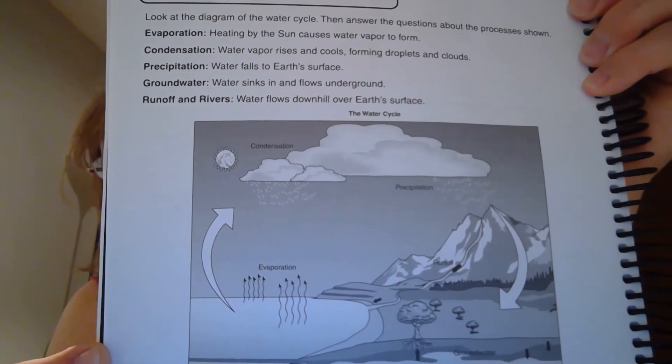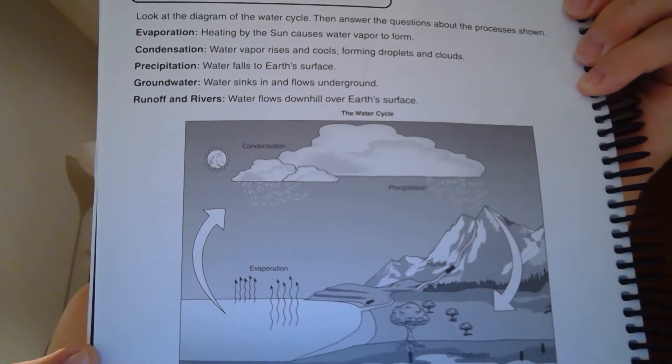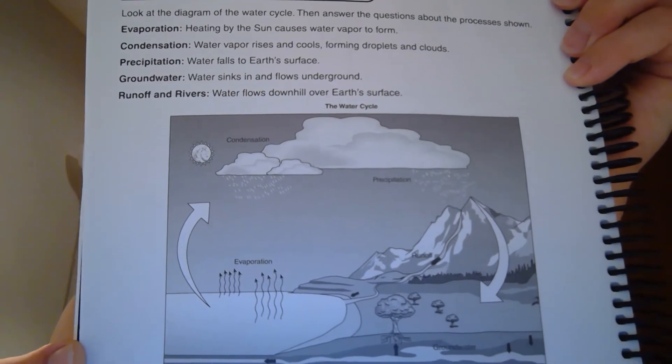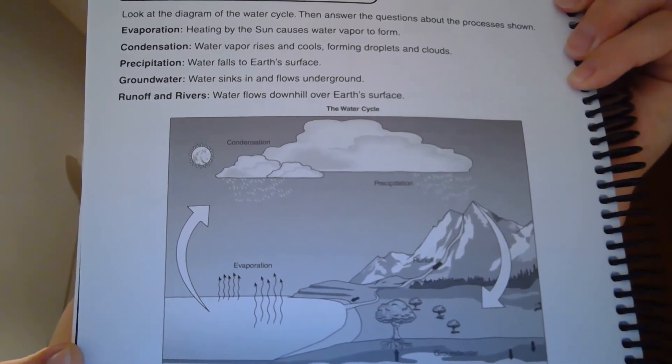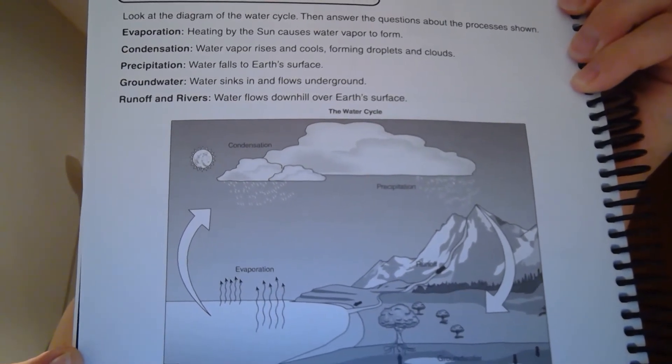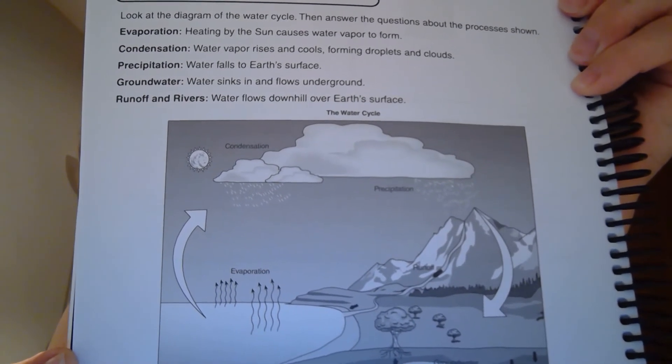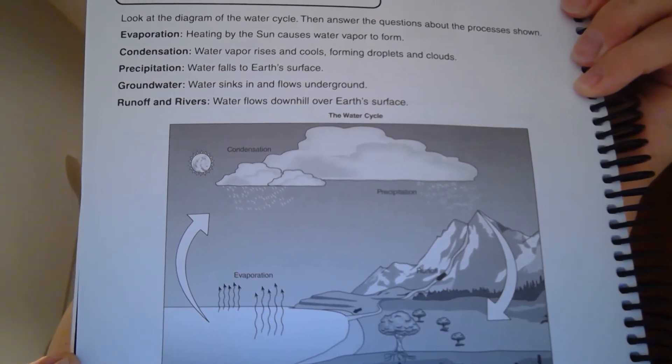You'll see some vocabulary words on there describing the different parts of the water cycle — the different processes like evaporation, condensation, precipitation, groundwater, runoff, and rivers. When I ask you questions in the Google Form, you're not giving me one-word answers, and don't just copy what's written as a definition. Show me your understanding of the diagram.